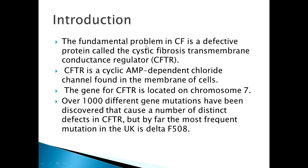The fundamental problem in cystic fibrosis is a defective protein called the cystic fibrosis transmembrane conductance regulator (CFTR). CFTR is a cyclic AMP-dependent chloride channel found in the membrane of cells. The gene for CFTR is located on chromosome 7. Over 1000 different gene mutations have been discovered, but by far the most frequent mutation in the UK is Delta F508, leading to a wide variety of clinical presentations.